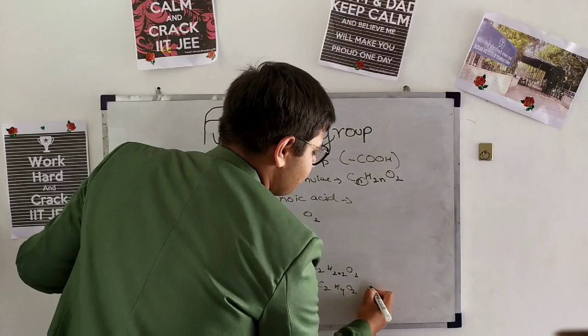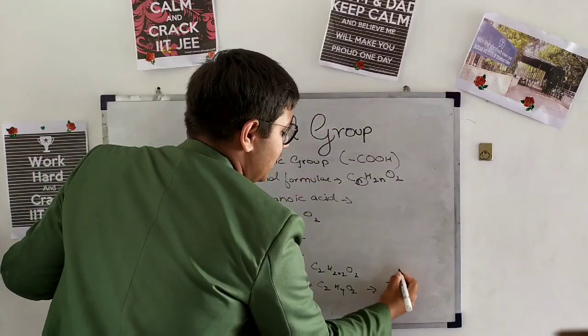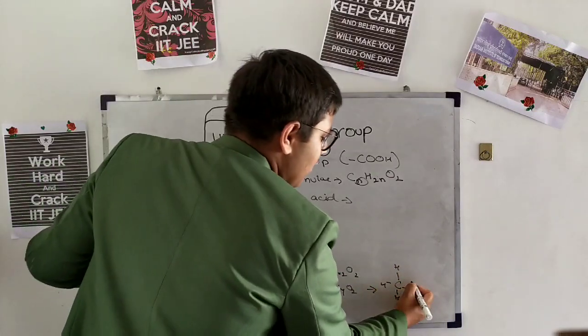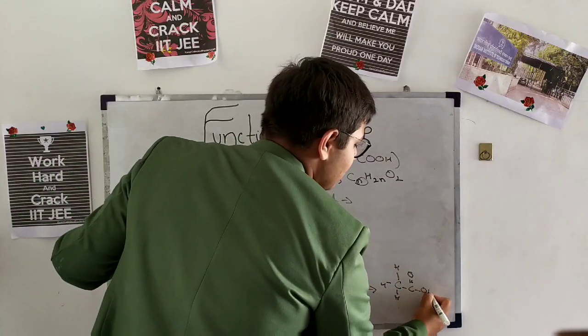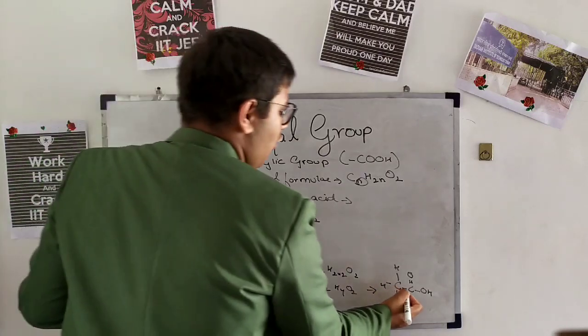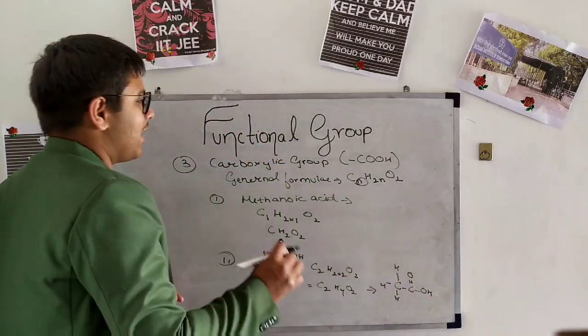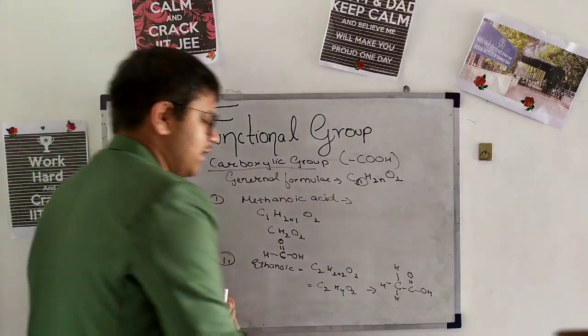So structure will be like C and C. Now we have to complete tetravalency of first carbon with H only, and at the second we have to write double bond O and OH. At every end of last carbon we have to write this only so that we can recognize that it is a carboxylic group.